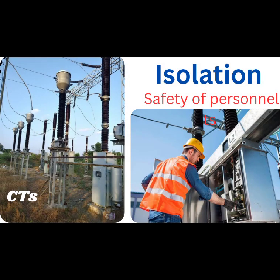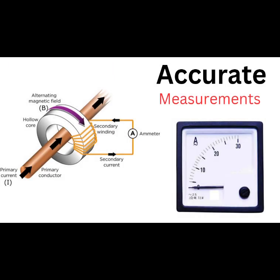One, isolation. Current transformers provide electrical isolation between the primary and secondary circuits, which is crucial for safety. This isolation protects measurement and protection devices from high voltages present on the primary side, ensuring the safety of personnel and equipment.